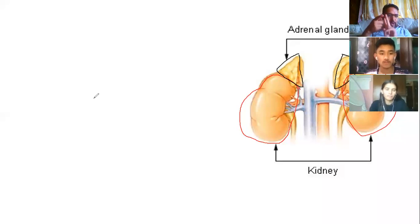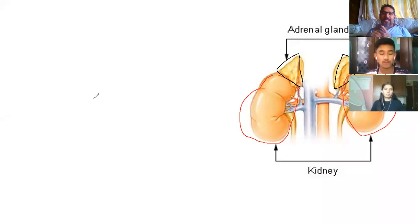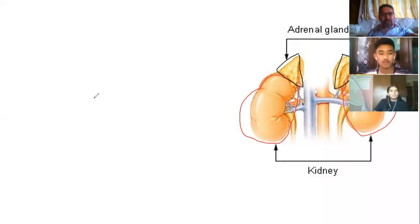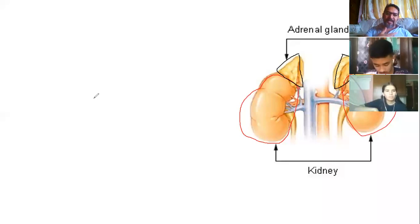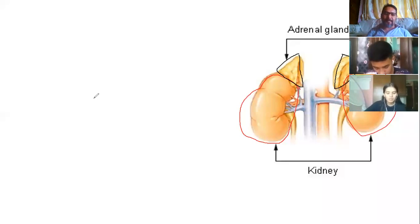Mineralocorticoids are used in our body to store minerals. They help to resupply and balance the minerals in the body, similar to the role of parathormone.